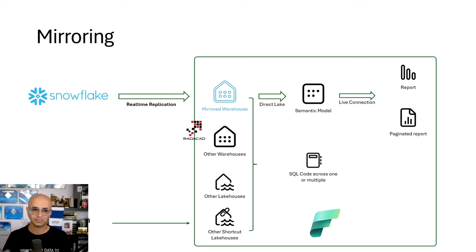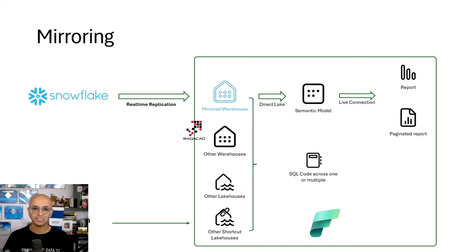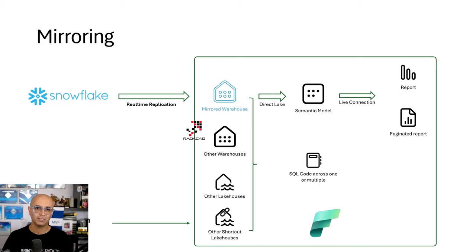If there are new records added to Snowflake, or if some records are deleted or changed, those changes would be immediately — or let's say near real-time — synchronized in the mirrored warehouse inside Fabric. So that mirrored warehouse inside Fabric would be like a normal warehouse, because that data is actually getting copied in here.